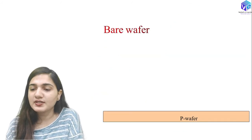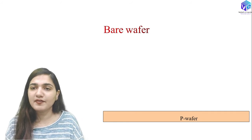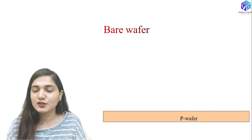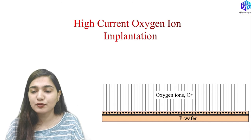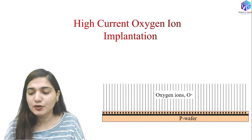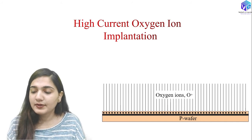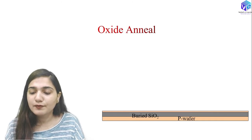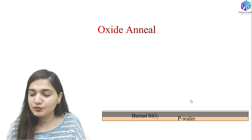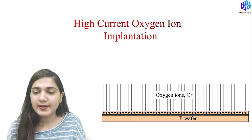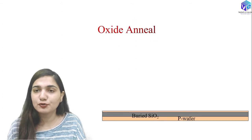First, we start with a bare P-type doped silicon wafer surface. Then, we incorporate high-current oxygen ion implantation, whereby oxygen ions penetrate from the surface and go deeper inside the P-type wafer, forming a buried SiO2 layer inside the P-type wafer.